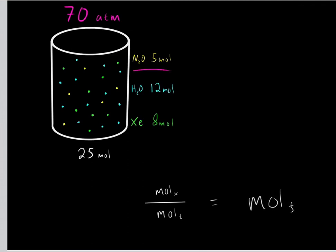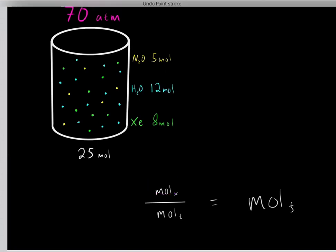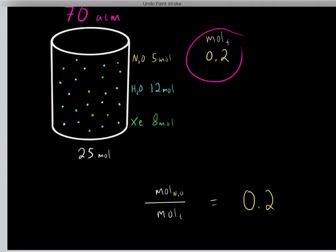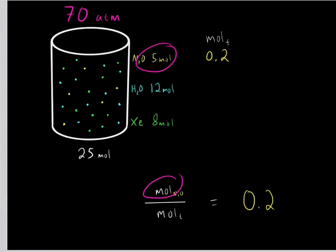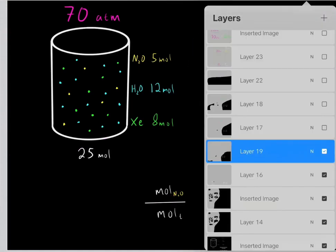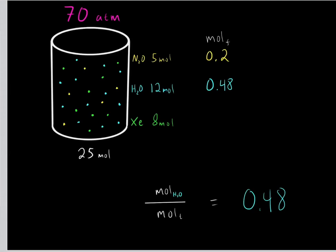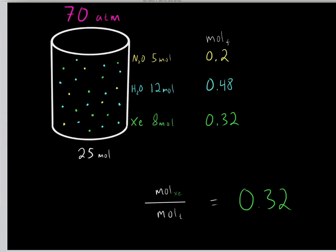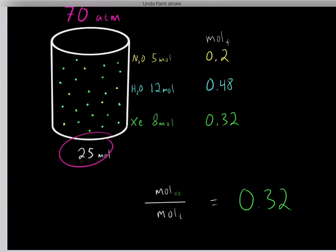Next, we find the mole fraction of each gas. The mole fraction of dinitrogen oxide is 0.2, because we have 5 moles out of 25 total moles. The mole fraction of water is 0.48, because 12 moles divided by 25 moles equals 0.48. The mole fraction of xenon is 0.32, because 8 moles divided by 25 total moles gives 0.32.